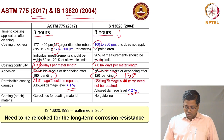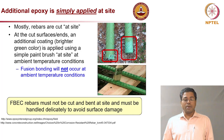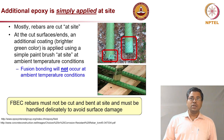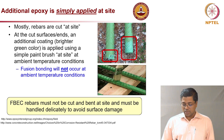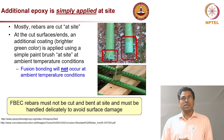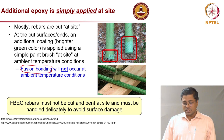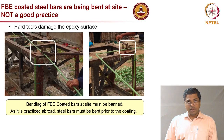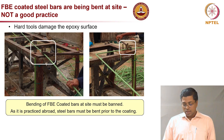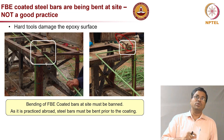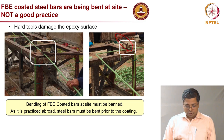In practice, when coating is damaged at the ends, additional coating is applied at the site. However, this is done at ambient temperature — fusion bonding will not happen. When bending rebars after epoxy coating, the lever arm used is made of steel and will pinch the softer epoxy coating, leading to damage especially near the bend region.